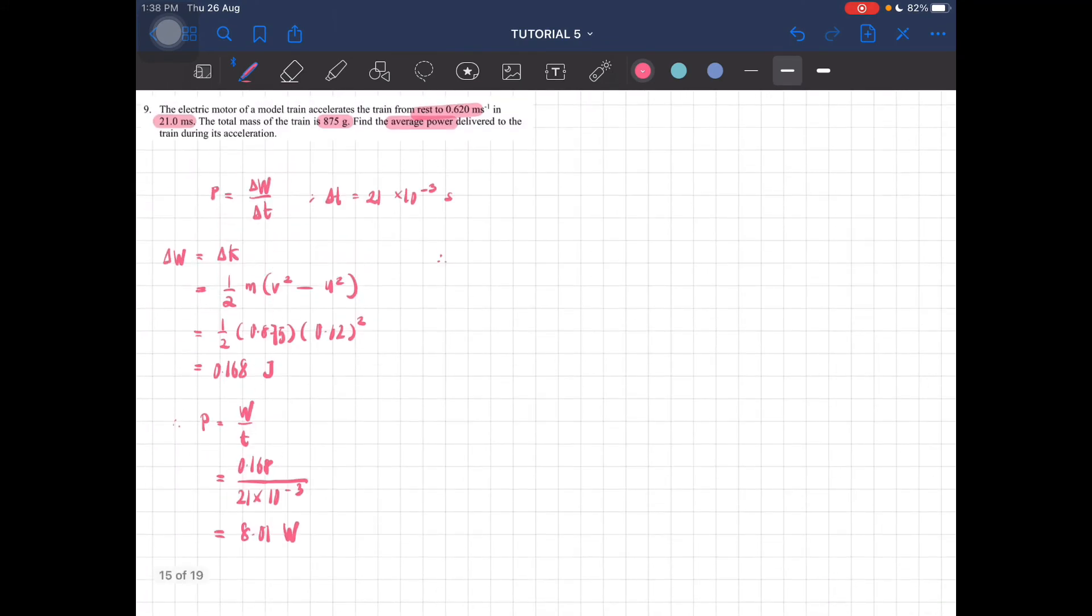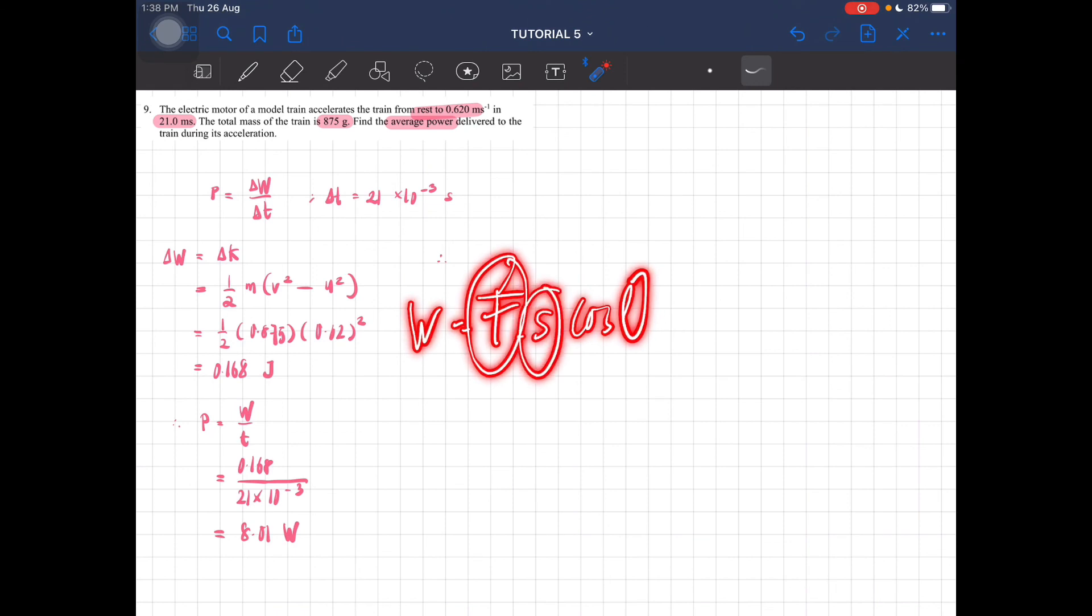Okay, so this is the question on power. Make sure you can relate each subtopic. If delta W, usually W is work done, so it's F s cos theta. Currently we don't have the value of force and displacement, so what you can think of is, oh, we can use kinetic energy theorem. You have to think quickly like that so you can solve this question quickly.